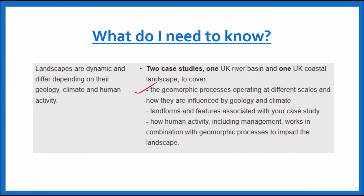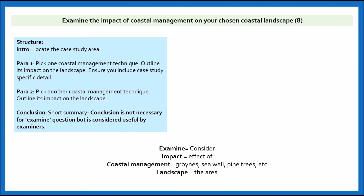Okay, so we have looked at the geomorphic processes, the landforms, and how human activity including management works with the area and how it impacts the landscapes. So let's look at an example of a question you could get and how we would go about answering that. The question says: 'Examine the impact of coastal management on your chosen coastal landscape.' Let's break down that question quickly. 'Examine' means to consider and go into good amounts of detail. We want to look at the effect of things like groins, seawalls, pine trees and so on on the area of North Norfolk. We need to make sure we make it specific to North Norfolk in order to gain those marks, because it's a case study based question.